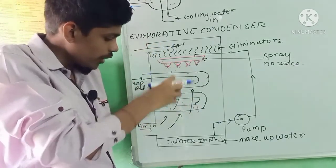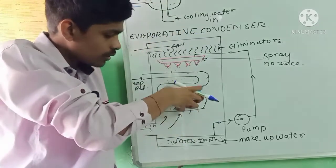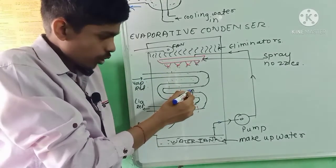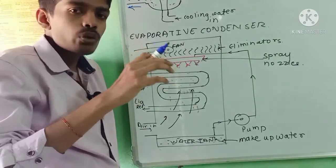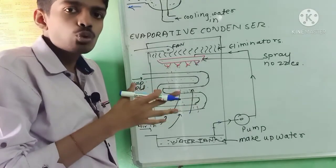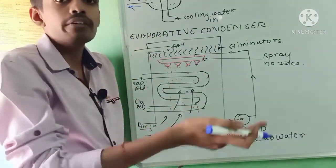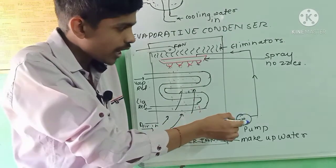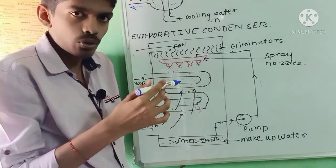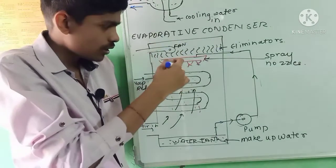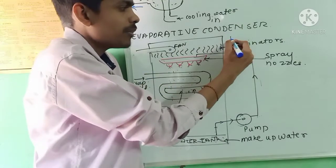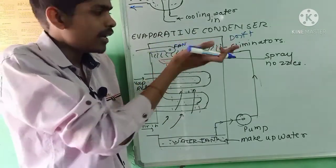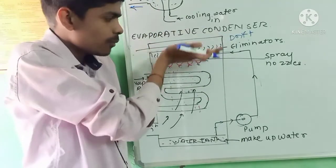The fan draws air from the bottom side towards the top of the condenser. As this air passes over the coil surface, water particles on the surface also evaporate, aiding cooling. Most of the conversion of vapor refrigerant into liquid refrigerant is achieved by this evaporation. The cooled water collects in the water tank at the bottom and is recirculated by the pump to the spray nozzles — this is the recirculated water system. Drift eliminators prevent water particles from escaping with the air; any captured water particles fall back into the tank.